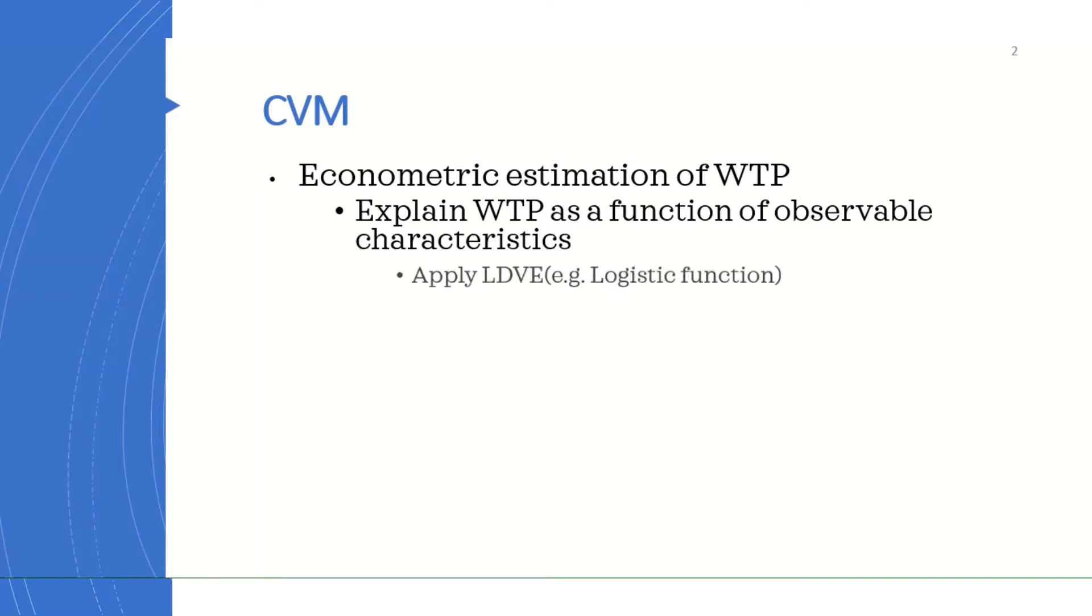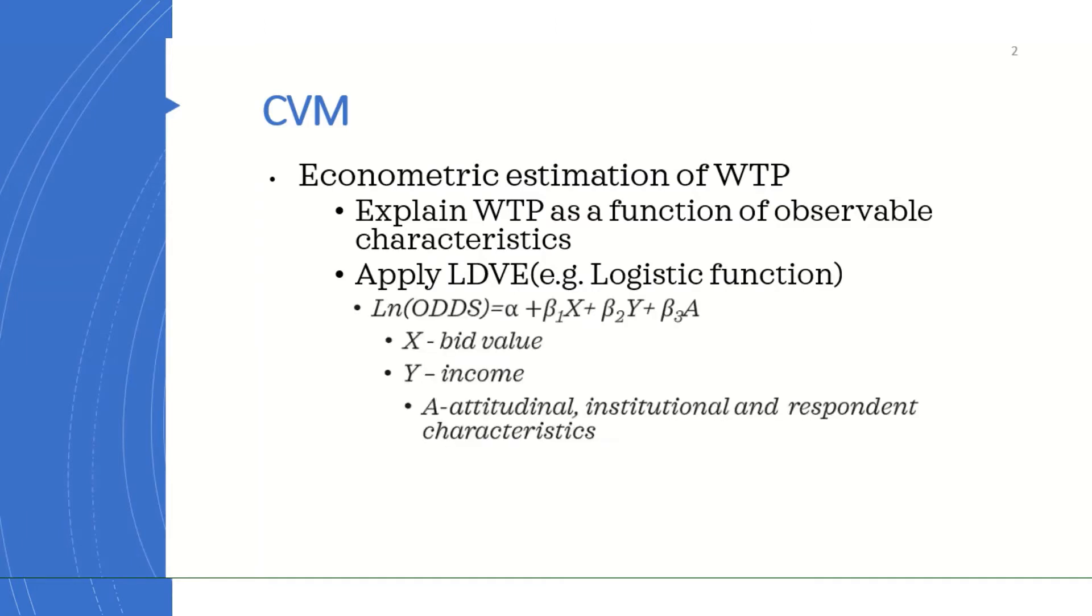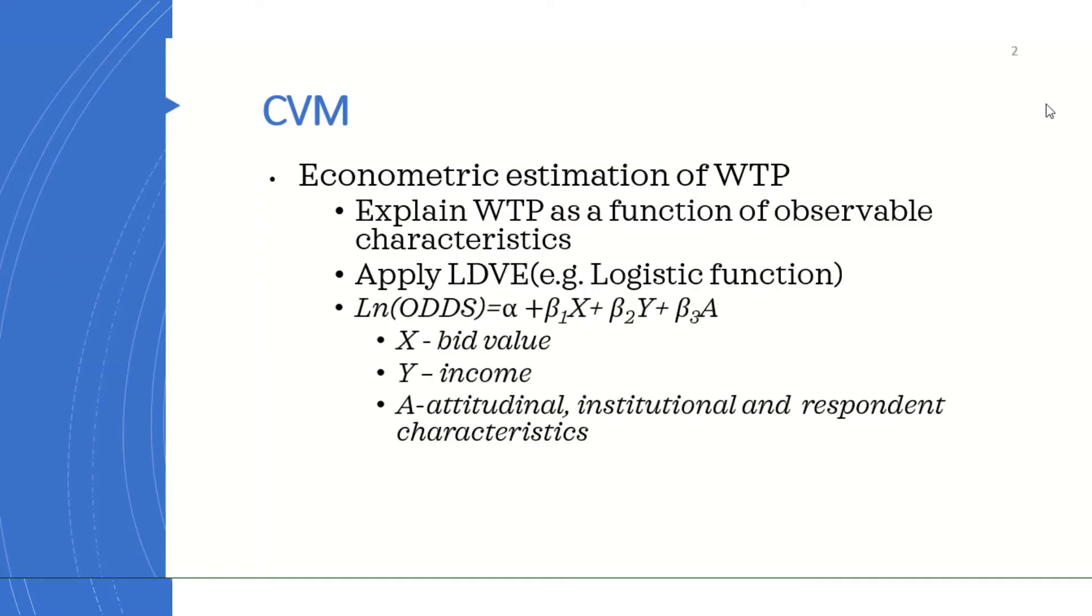The idea there is to explain willingness to pay as a function of observable characteristics of the correspondents, and then apply one of the limited dependent variable econometric functions, for example logistic or probit function.